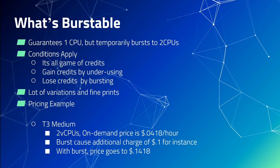Now let's have a quick look at a pricing example for AWS EC2 instances. One of the commonly used instance types is T3 medium — a general purpose virtual machine. A T3 medium has two virtual CPUs, and the on-demand price is $0.0418 per hour. The documentation says that if you burst beyond those two vCPUs, you will be charged an additional $0.10 for the whole instance — that is $0.05 per vCPU — so with two vCPUs, it becomes $0.10.